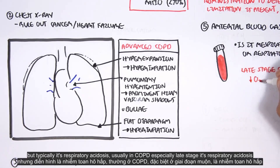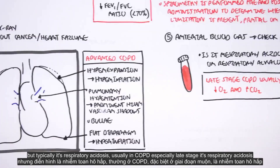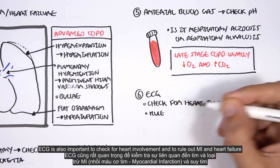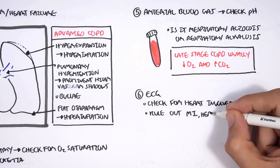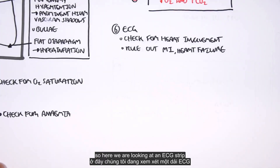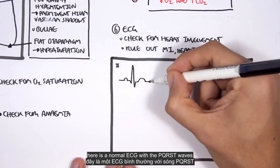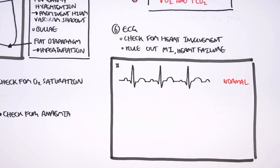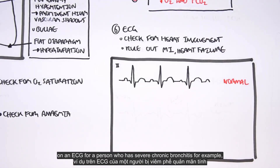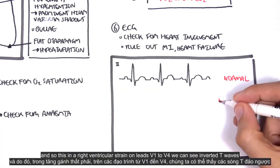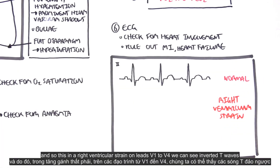Typically in COPD, especially late stage, it is respiratory acidosis. ECG is also important to check for heart involvement and to rule out MI and heart failure. Here we are looking at a normal ECG with the PQRST waves. On an ECG for a person with severe chronic bronchitis, for example, we may see signs of right ventricular strain — on leads V1 to V4 we can see inverted T waves.